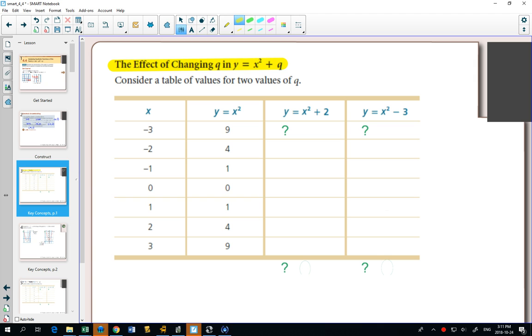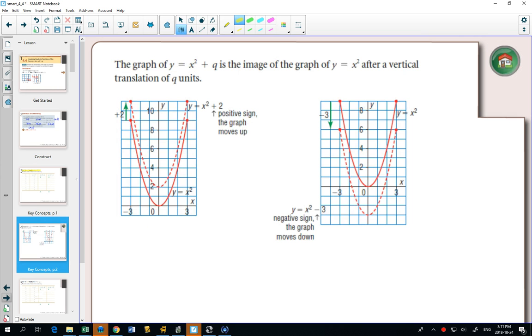The first thing you can highlight is this. What is going to happen when you have y equals x squared plus q? What is that q going to do? That q is going to move it up or down. So you can highlight this right underneath, and they have a couple of examples for us.